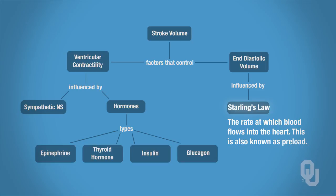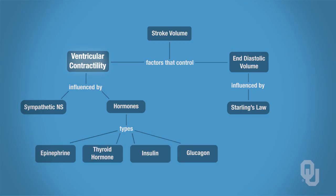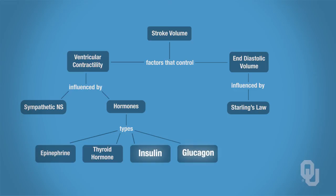Now let's focus on the factors that affect ventricular contractility — the other factor that affects stroke volume. Ventricular contractility is affected by the sympathetic nervous system, which increases the force of contraction. There are also hormones that can affect ventricular contractility: insulin, glucagon, thyroid hormone, and epinephrine will all increase the force of ventricular contraction.